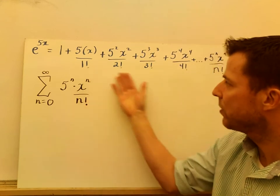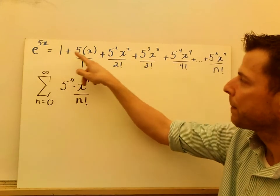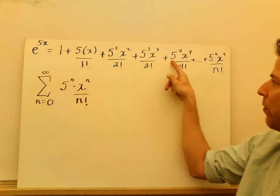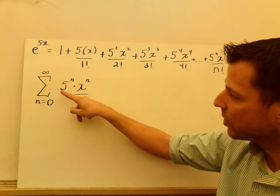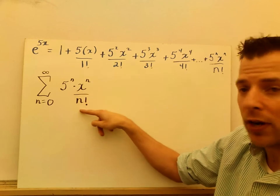So what I try to do from here is write the pattern. I notice that there's 5, 5, 5, 5, so 0 term, 1st term, 2nd term, 3rd, 4th, 5th term. So the sum from 0 to infinity is going to be 5^n times x^n over n factorial.